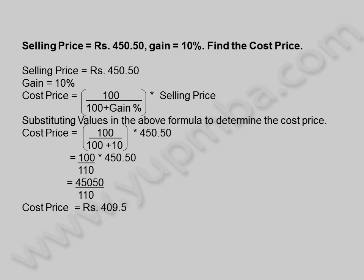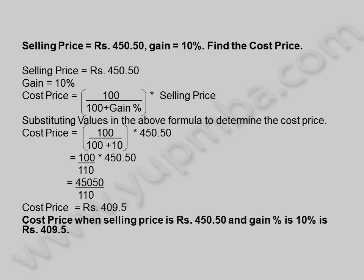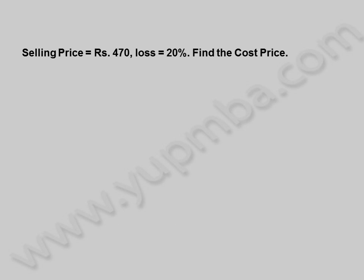Cost Price is equal to 409.5 Rupees. Cost Price when Selling Price is 450.50 Rupees and Gain percentage is 10% is 409.5 Rupees. Let us see another example.